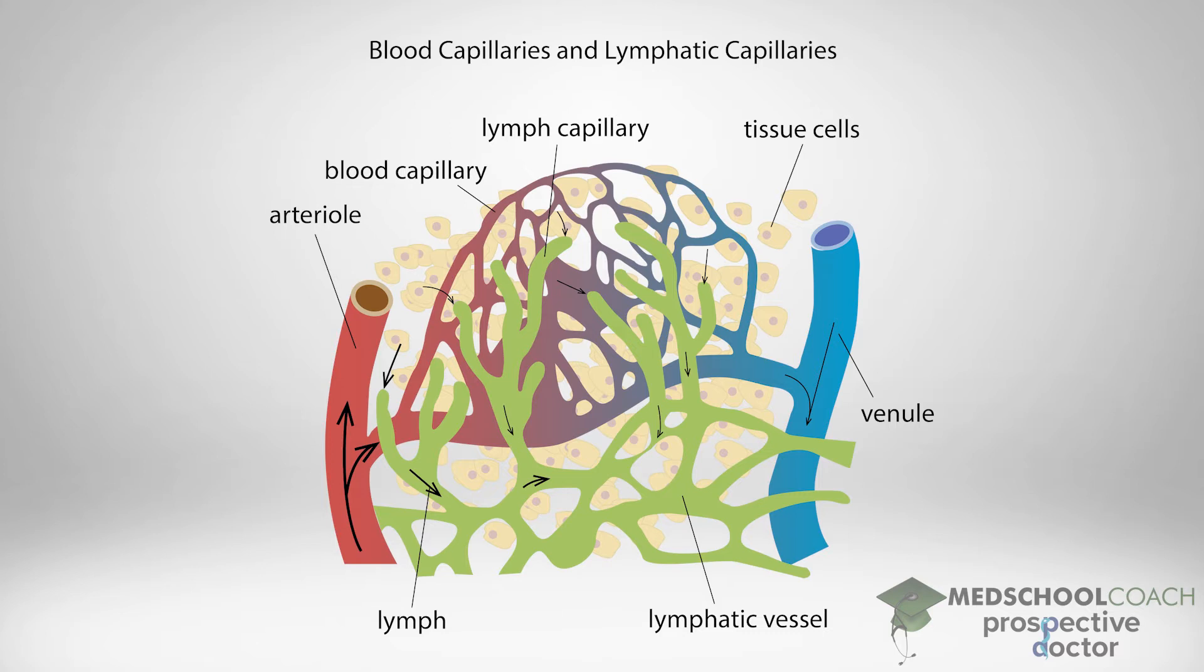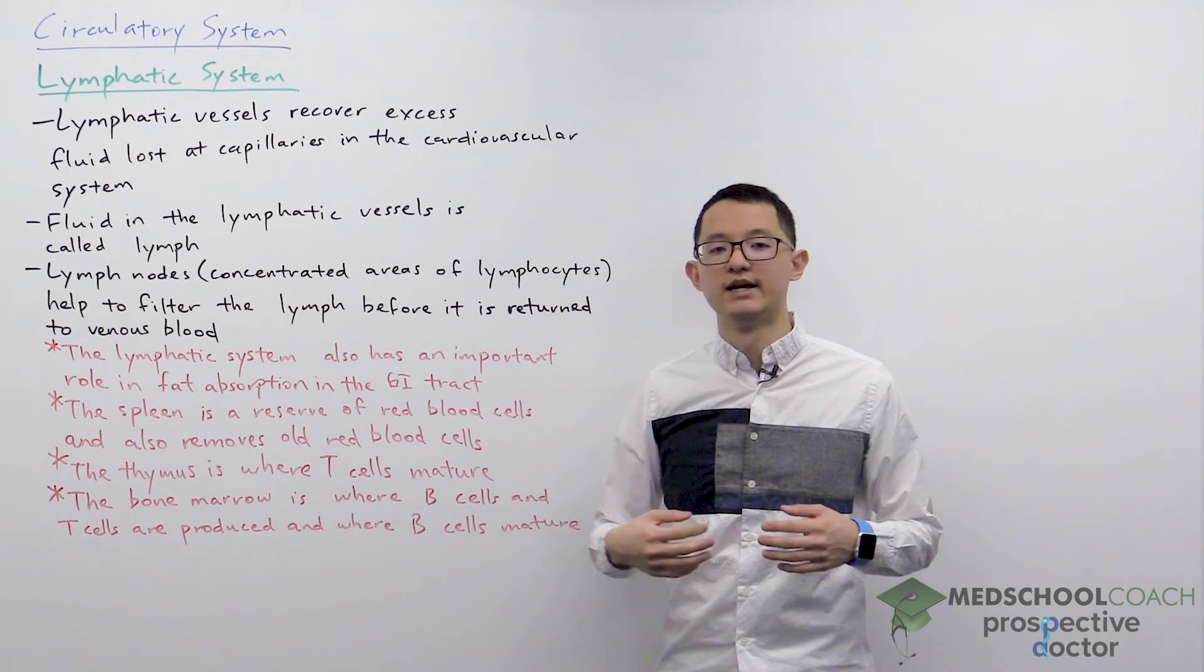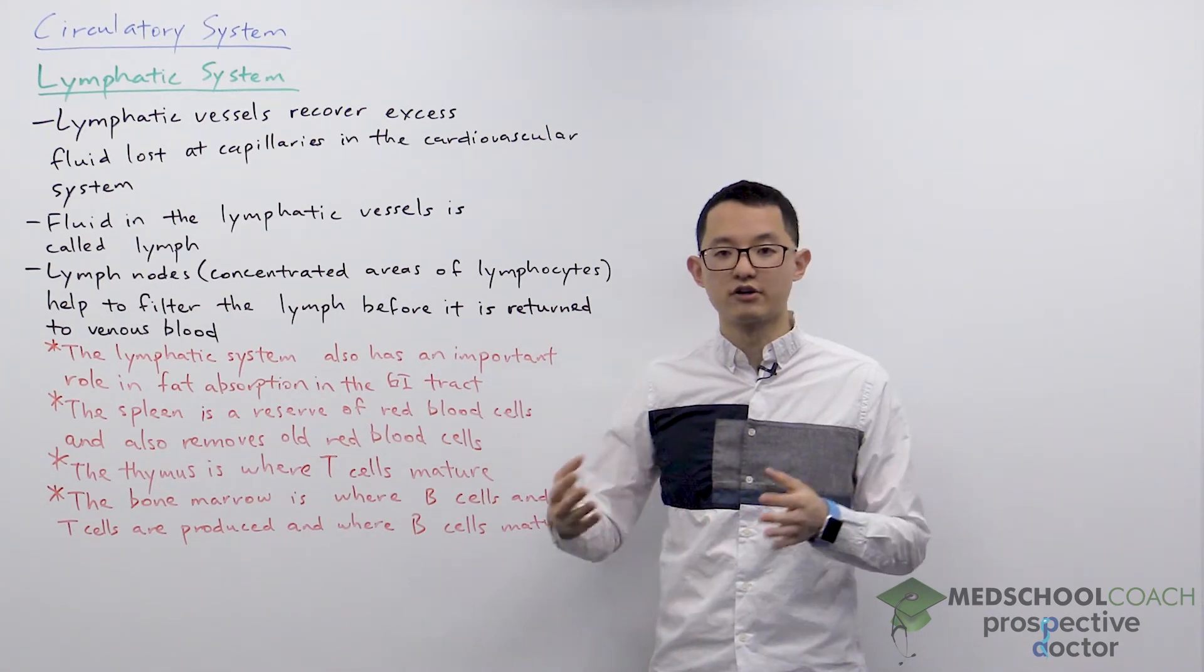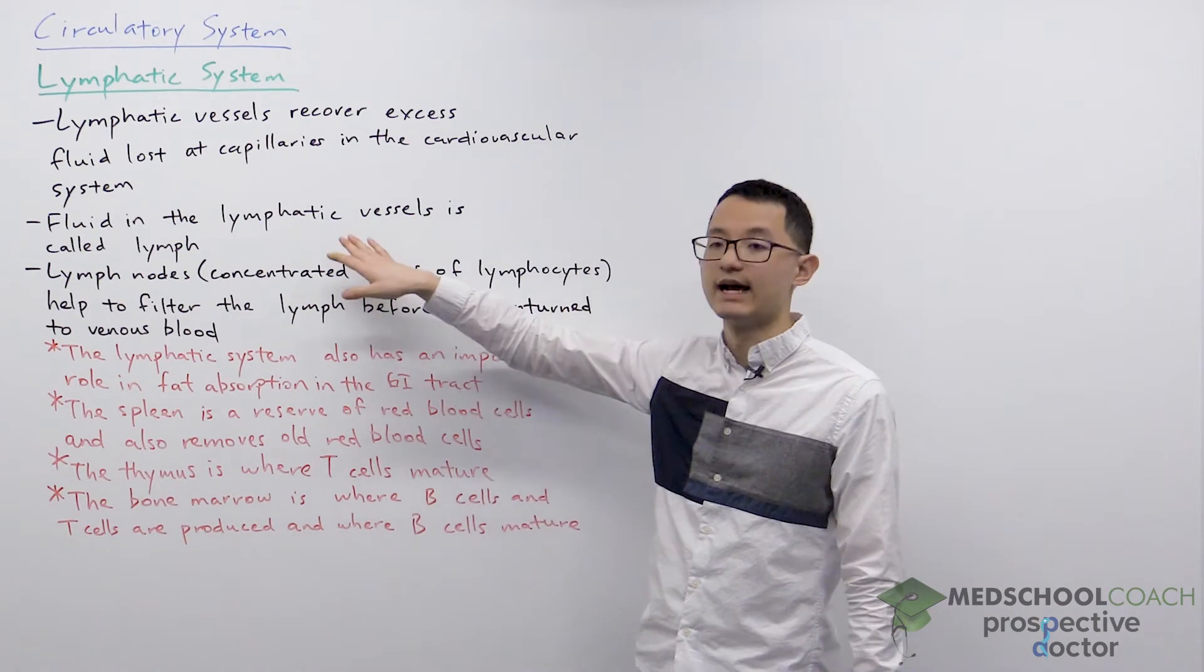So really one of the primary functions of the lymphatic system is to recover excess fluid lost at the capillaries in the cardiovascular system. This fluid that gets taken up by the lymphatic vessels is no longer called blood; it is considered lymph.